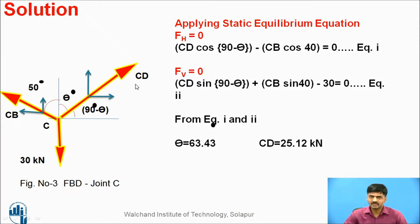For example, if I consider CD, all horizontal forces: CD cos (90-θ) minus CB, now considering with respect to x-axis, 50 degrees is given here, 40 degrees is present here. So CB cos 40, this is negative sign because left-hand side forces are there, equals zero. This is equation number 1.